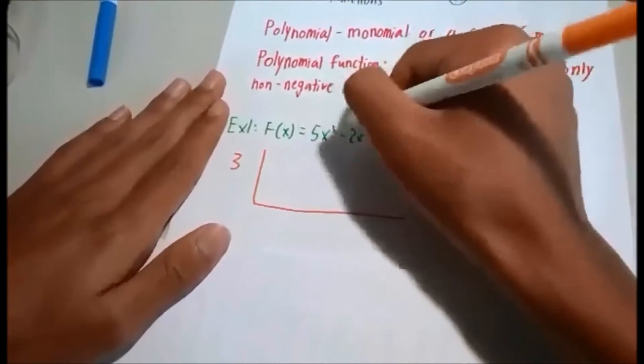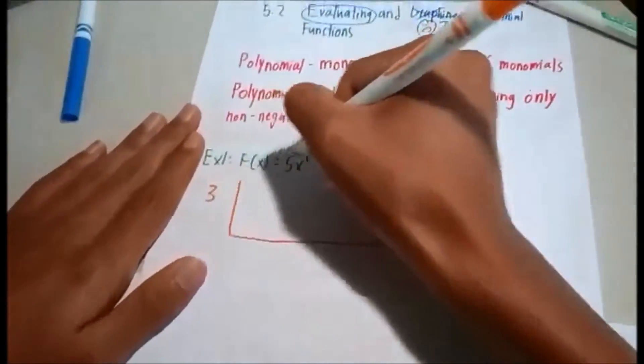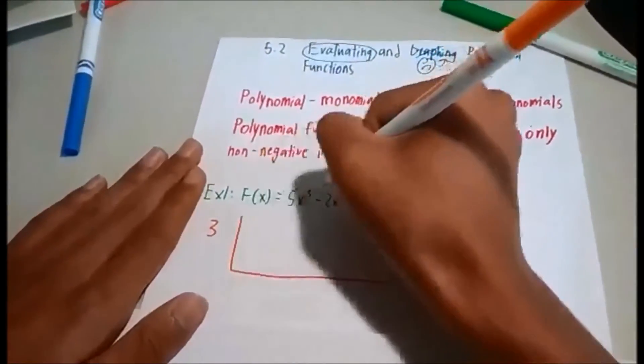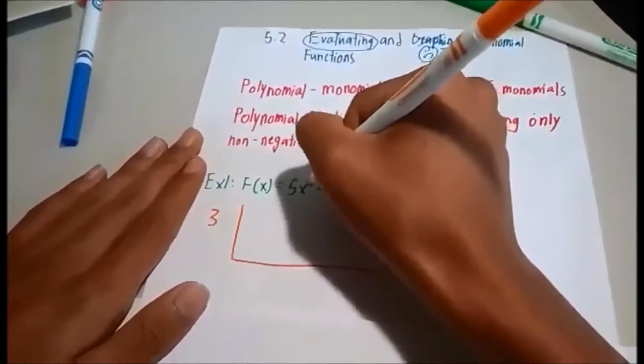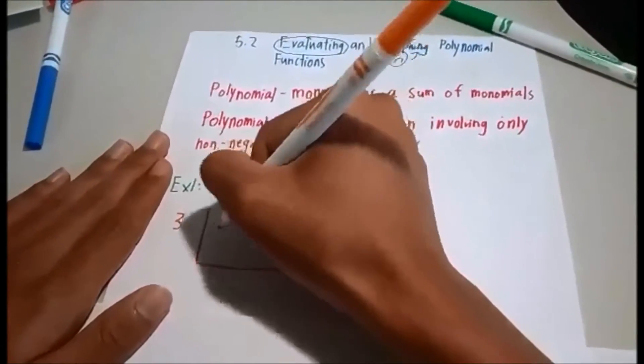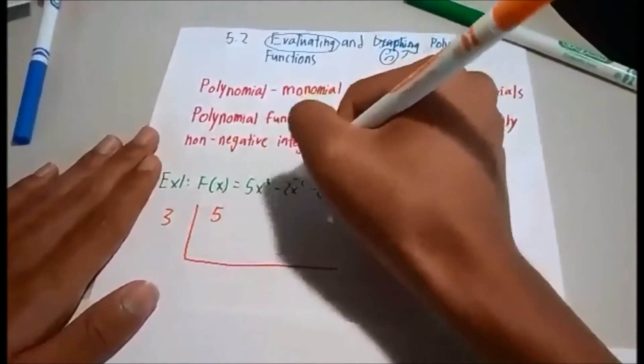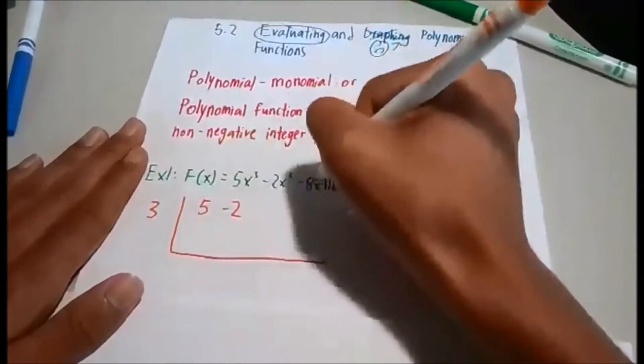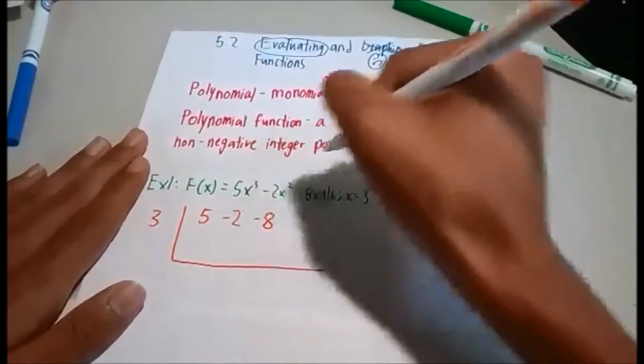To put the numbers into the inside of the L, it will be according to the size of the exponents for the coefficients. So 5x cubed, that is the largest coefficient for the largest number. So 5 will be going on the first part of the problem. Negative 2 will follow that along with negative 8 and 16.